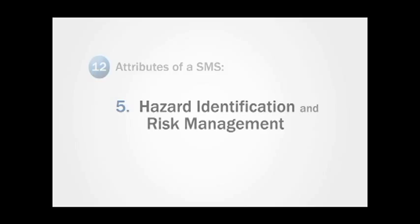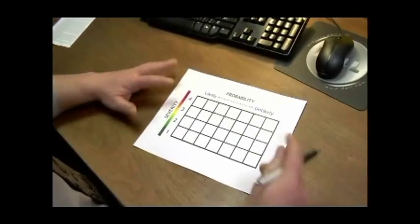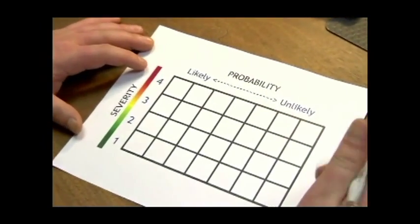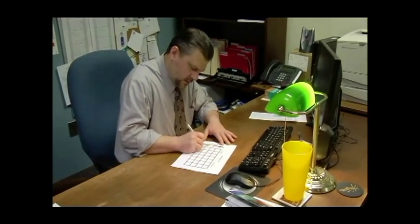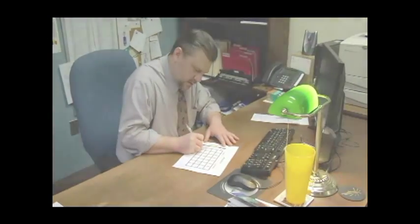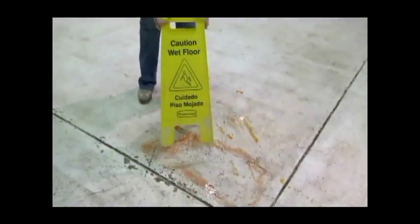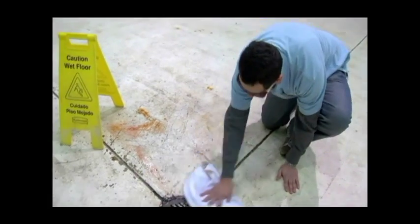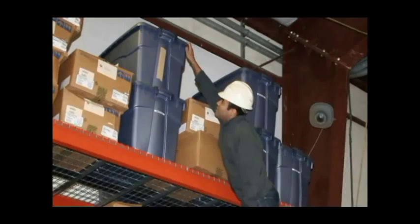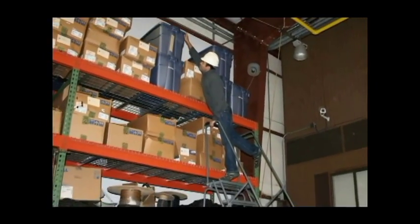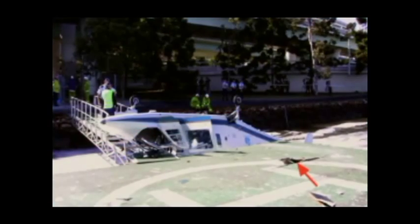L'identificazione degli hazard e la gestione del rischio sono il cuore di un SMS. Questi sono i processi principali che ti permetteranno di riconoscere e indirizzare condizioni pericolose prima che esse possano trasformarsi in un incidente. La terminologia usata per descrivere questi processi potrebbe farli apparire complessi, ma in realtà il principio è molto semplice. La sfida è avere a che fare con il fatto che nessuno di questi hazard sembrerà a prima vista ovvio. È una sfida maggiore di un'analisi di un incidente, perché in quest'ultimo caso hai un evento dal quale puoi risalire all'indietro per trovare la causa.